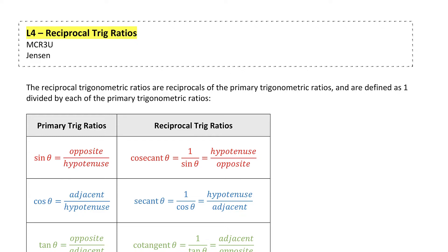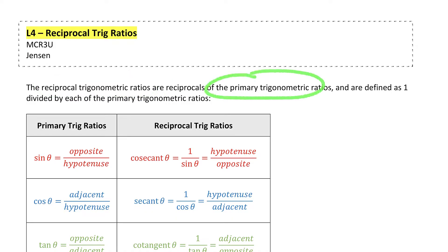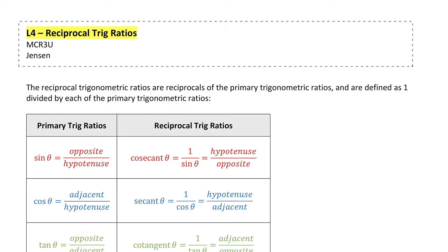Here's lesson four of the trig geometry unit. In this lesson, I'm going to teach you about the reciprocal trig ratios. The reciprocal trig ratios are just the reciprocals of the primary trig ratios. A reciprocal is defined as one divided by each of the primary trig ratios — it's just the flip of each of them.